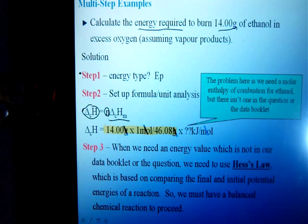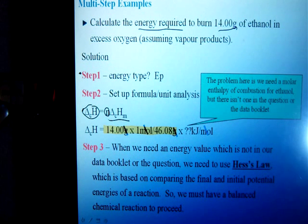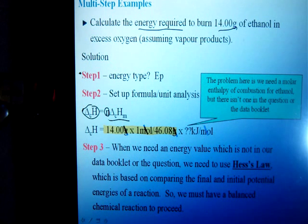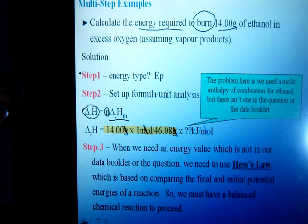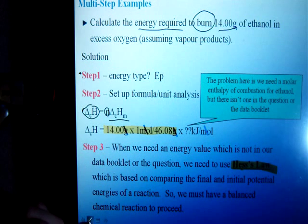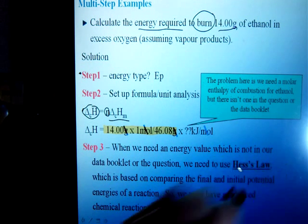However, big problem — we don't have a kilojoules per mole value. One of the number one mistakes made is: if there's no reaction given with the energy associated with it, students will often go right to their data table and find a kilojoules per mole value for ethanol. Well, the value in your data table is a heat of formation, but this is a combustion reaction — we're burning ethanol. So you cannot just use the heat of formation kJ/mol value for ethanol. When you need energy and don't have it, that's an instance where you have to do Hess's Law — in this case, using the heat of formation values.